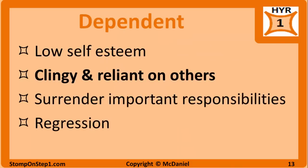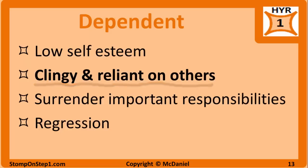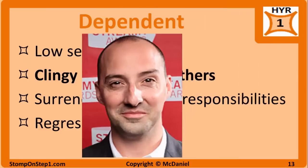People with dependent personality disorder have very low self-esteem, which leads them to be very reliant on others — whether a significant other, a partner, or even their physician. These patients feel like they need to be taken care of and are afraid of being abandoned. They are willing to surrender even very important responsibilities like making medical decisions, generally agreeing with whatever their caretaker says. They are clingy and often display the regression ego defense. Examples include Buster from Arrested Development and people who stay in an abusive relationship simply because they don't think they can function on their own.